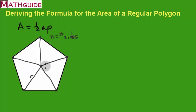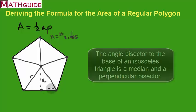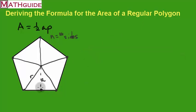I'm going to bisect one of these central angles. If I bisect an isosceles triangle with a segment, those two angles become congruent to each other. When you bisect an isosceles triangle, that segment also turns out to be a median — it cuts the side into two equal parts. We call this segment the apothem of a regular polygon. This angle bisector, which is also a median, is also a perpendicular bisector.